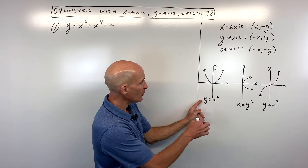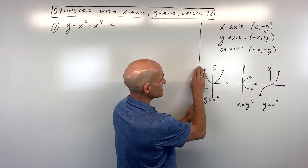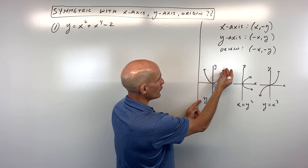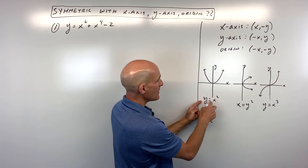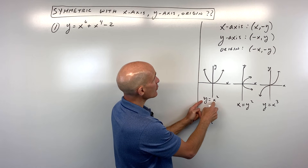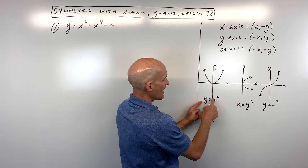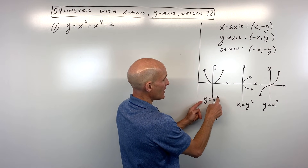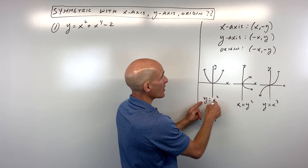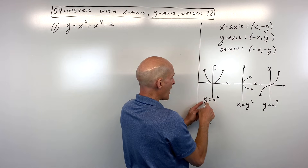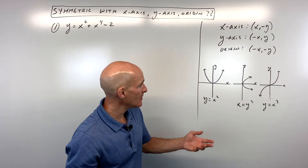For example, y = x² is symmetric about the y-axis. If we fold it over, it matches with itself. Notice that if we replace x with negative x, negative x quantity squared gives you x squared, and y replaced with y — you get that original equation back.